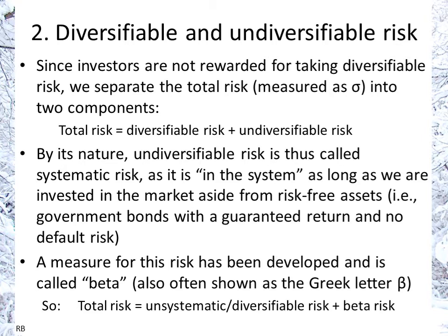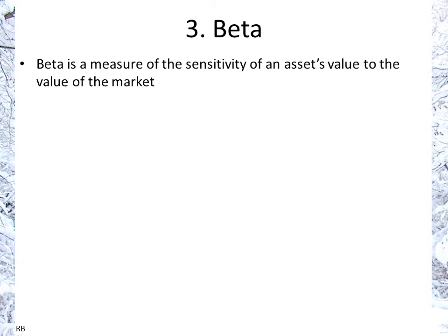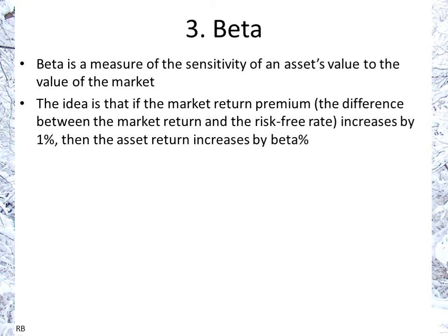A measure for systematic risk has been developed called beta, sometimes shown as the Greek letter β. Total risk equals the unsystematic or diversifiable risk plus the beta risk — and we care about beta because that's the risk we get paid for. Beta is a measure of the sensitivity of an asset's value to the value of the market, the market being the most broadly diversified set of assets. If the market return premium increases by one percent, the asset return will increase by beta percent — a linear relationship between beta and the market return premium.